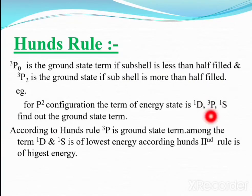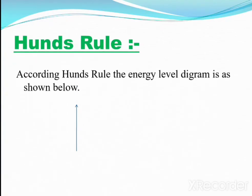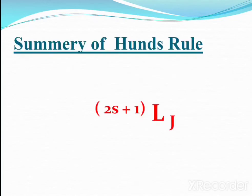For the remaining terms ¹D and ¹S, we apply rule number two. According to Hund's rule, the energy level diagram shows ³P at the lowest energy, then ¹D, then ¹S at the highest energy. This is how Hund's rule is useful for finding the ground state term — the one with the lowest energy.